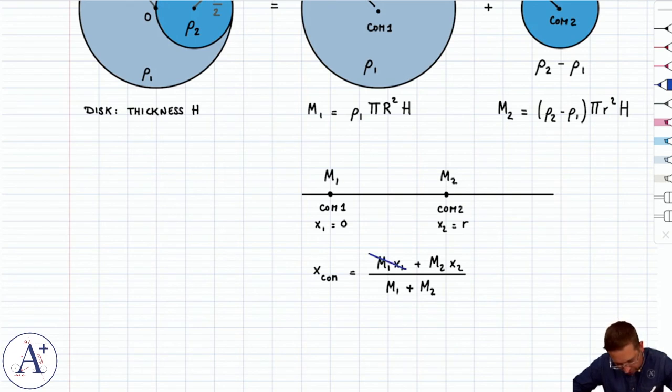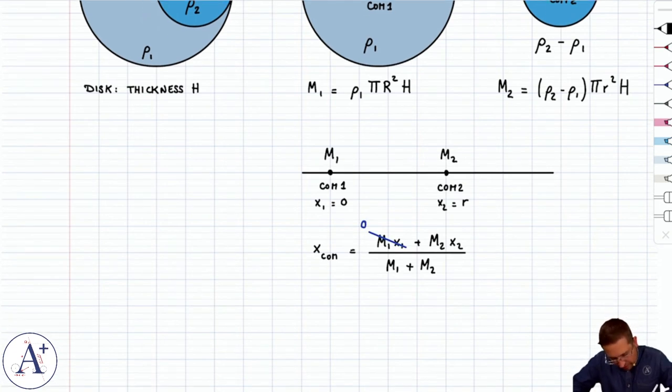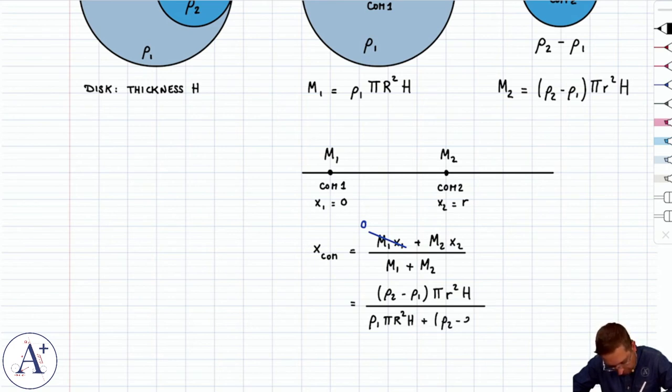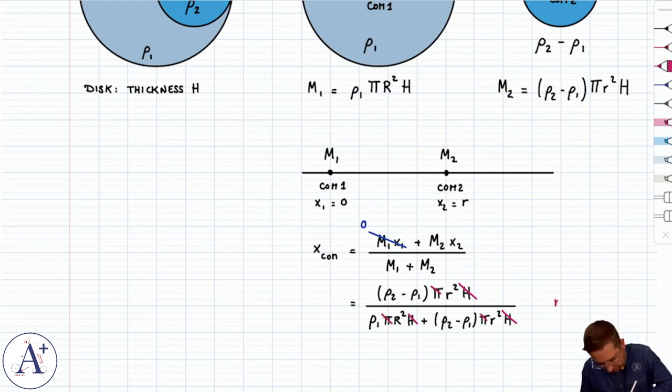So, x center of mass is going to be equal to m1 x1 plus m2 x2 divided by m1 plus m2. Now, x1 is zero, so this term vanishes already. And then m2, we know, is rho2 minus rho1 pi r squared big H divided by m1 is rho1 pi big R squared H plus rho2 minus rho1 pi little r squared H.